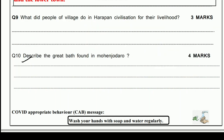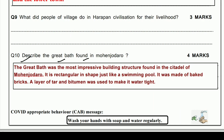Describe the Great Bath found in Mohenjo-Daro. The Great Bath was the most impressive building structure found in the citadel of Mohenjo-Daro — in the upper part of the city. It is rectangular in shape, just like a swimming pool. It was made of baked bricks, and a layer of tar and bitumen was used to make it watertight so that water could not leak out.